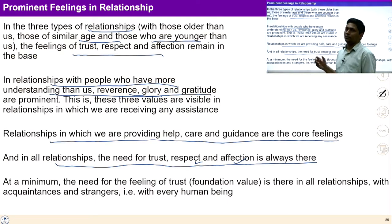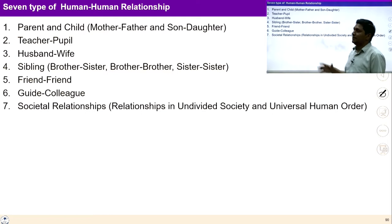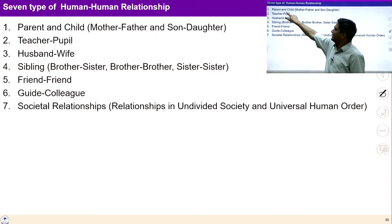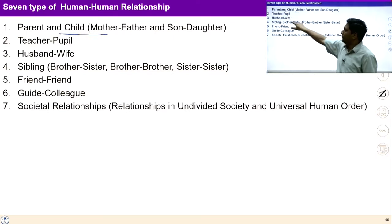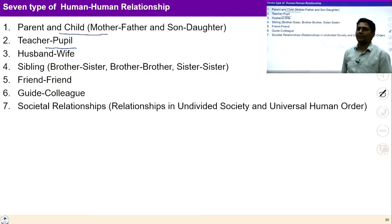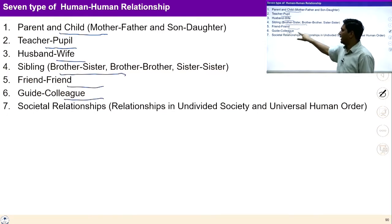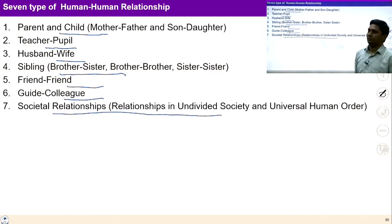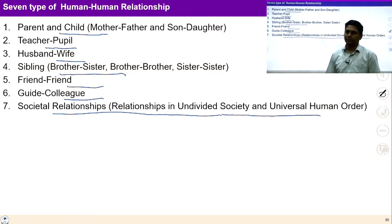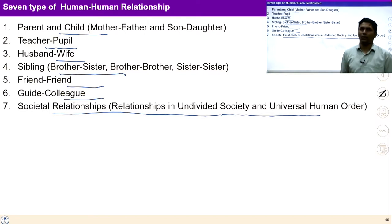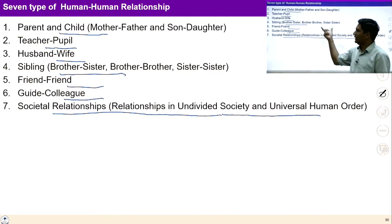With this background, we can see seven types of human-human relationships: parent and child, teacher and student, husband and wife, sibling, friend-friend, guide-colleague, and societal relationship — relationships to ensure an undivided society and universal human order. In this lecture we are going to study these seven kinds of relationships and what feelings are prominent in each.